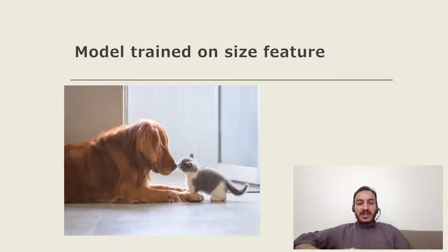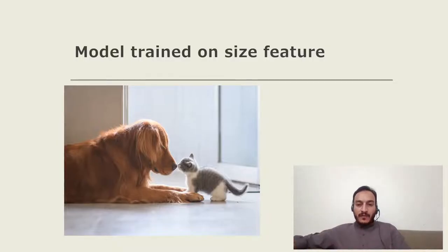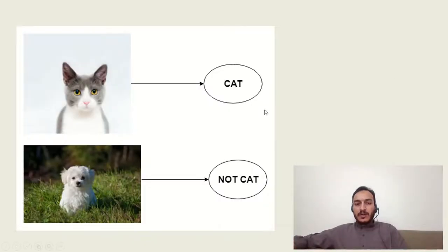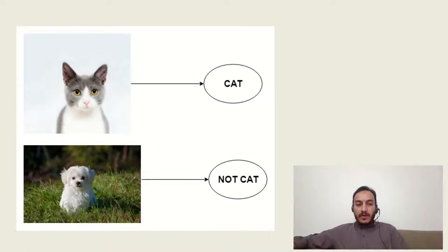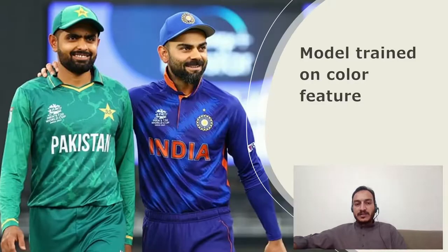But when you try your trained model on another image, your model will definitely fail, because there the size of the cat is bigger than that of a puppy or dog. So your model will not work in this case.